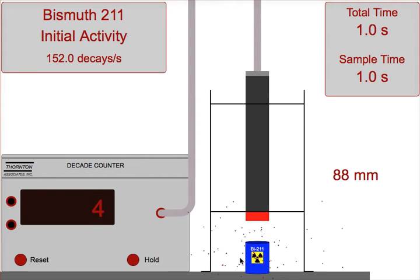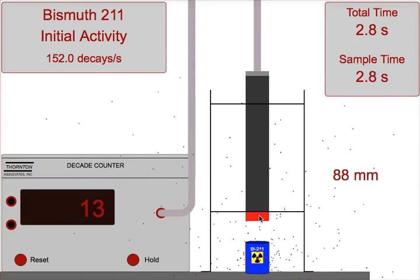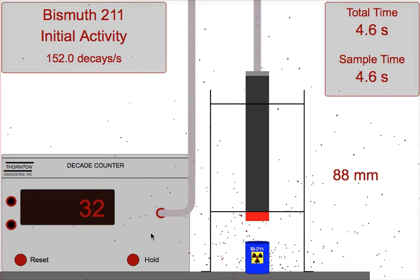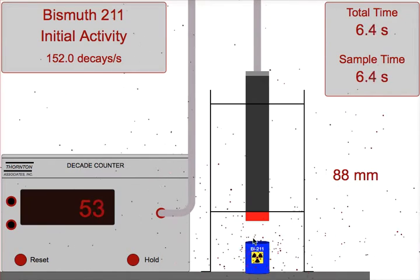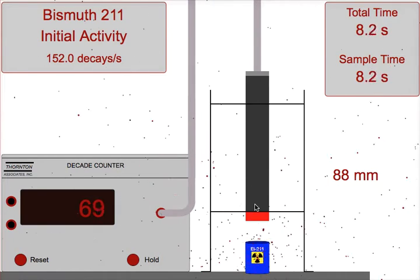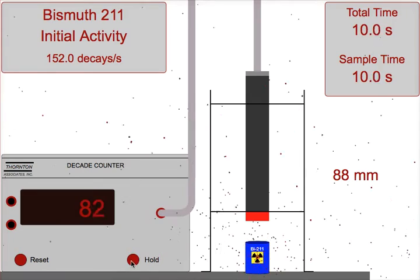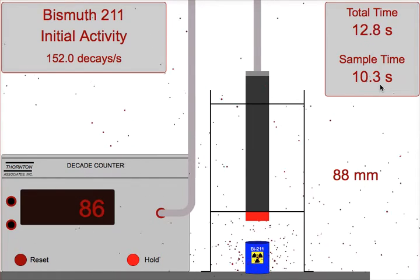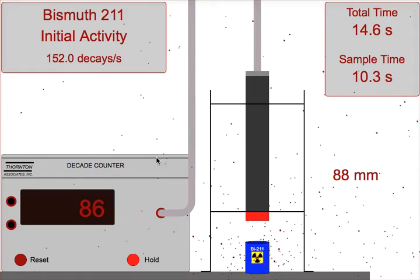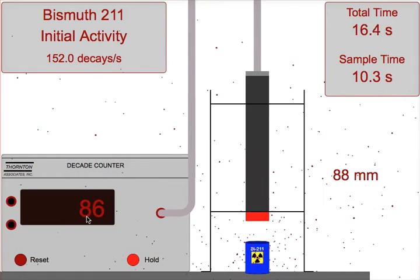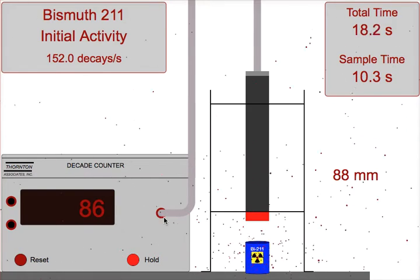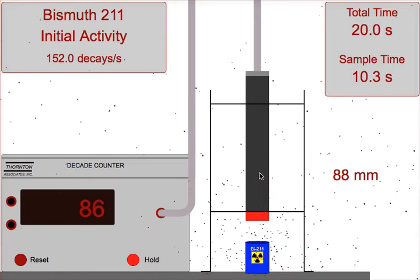When I click on begin, you'll notice that my radioactive sample is decaying. My decade counter is counting how many particles enter into the detector. My time is going. I want to pause it after 10 seconds of time has elapsed and record how many decays were picked up by my detector.